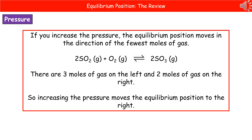So if we look at the example I've given you here, on the left we've got two moles of sulfur dioxide and one mole of oxygen, which gives us three moles of gas on the left. And on the right, we've got two moles of sulfur trioxide, so two moles on the right.